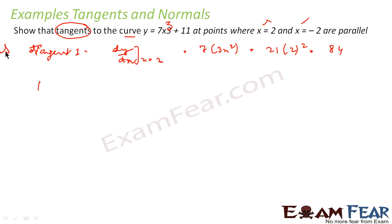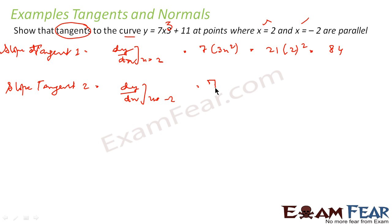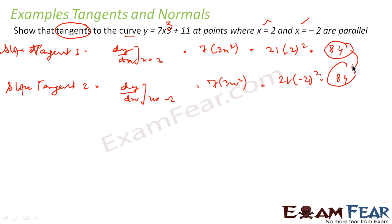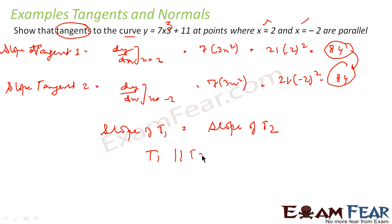The slope of tangent 2 is dy/dx at x = −2. This is 7 × 3x² again. Putting x = −2, this becomes 21 × (−2)², which is again 84. You can see both these values are the same. Since the slope of T1 equals the slope of T2, T1 is parallel to T2, and that is the answer.